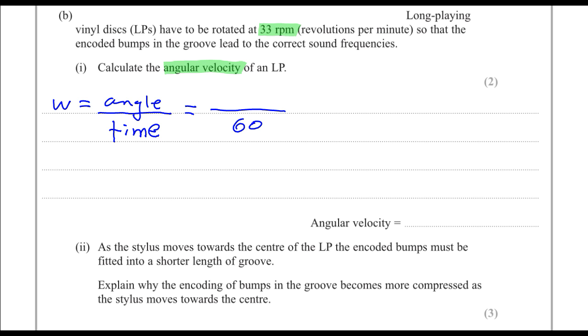And each revolution corresponds to 2π radians. So the total angle can be written as 33 times 2π. And that will give us an angular velocity of 3.5 radians per second.